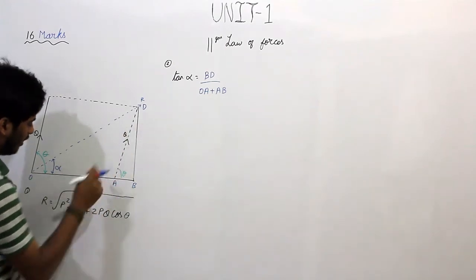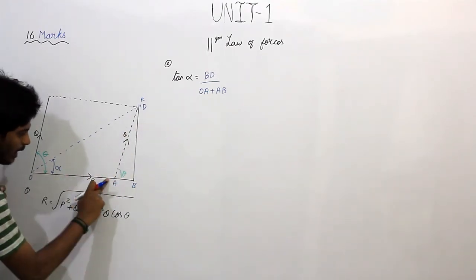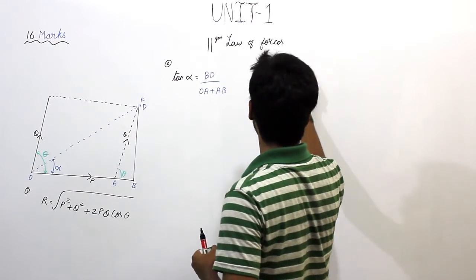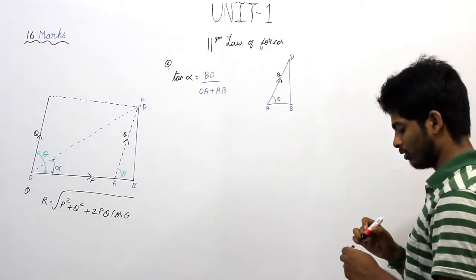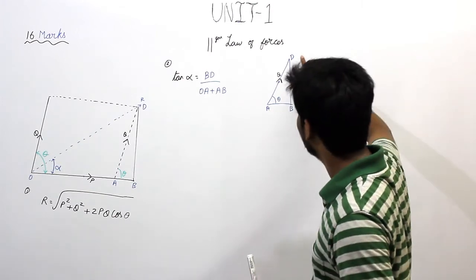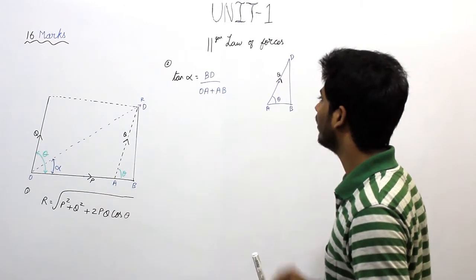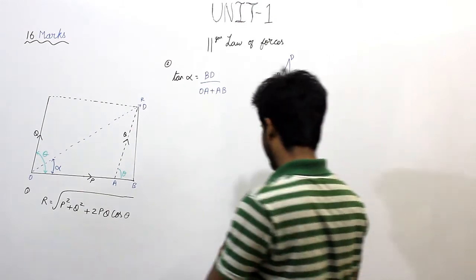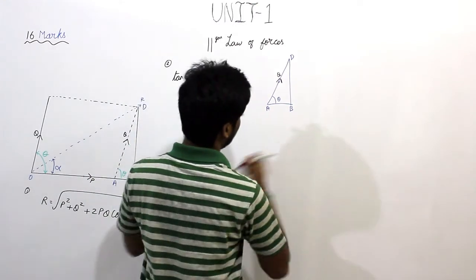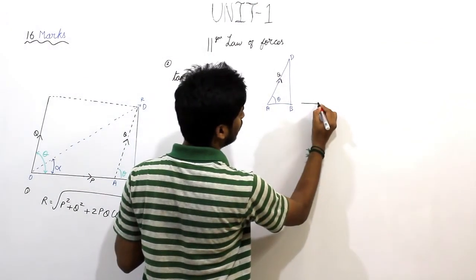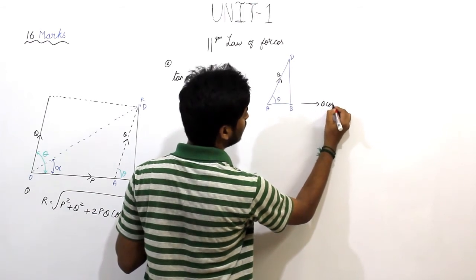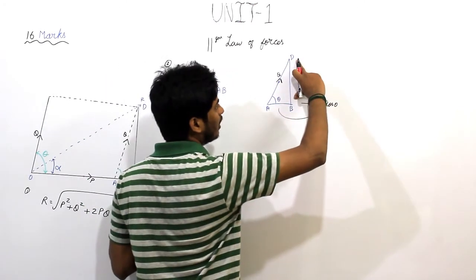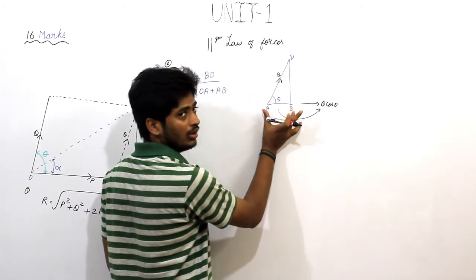Tan alpha is equal to opposite side by adjacent. The adjustment is the whole OA plus AB. Now let's write the right angle. This is force Q. In the Q force, it is making an angle with AB. Apply the right angle. Here the component is Q cos theta.